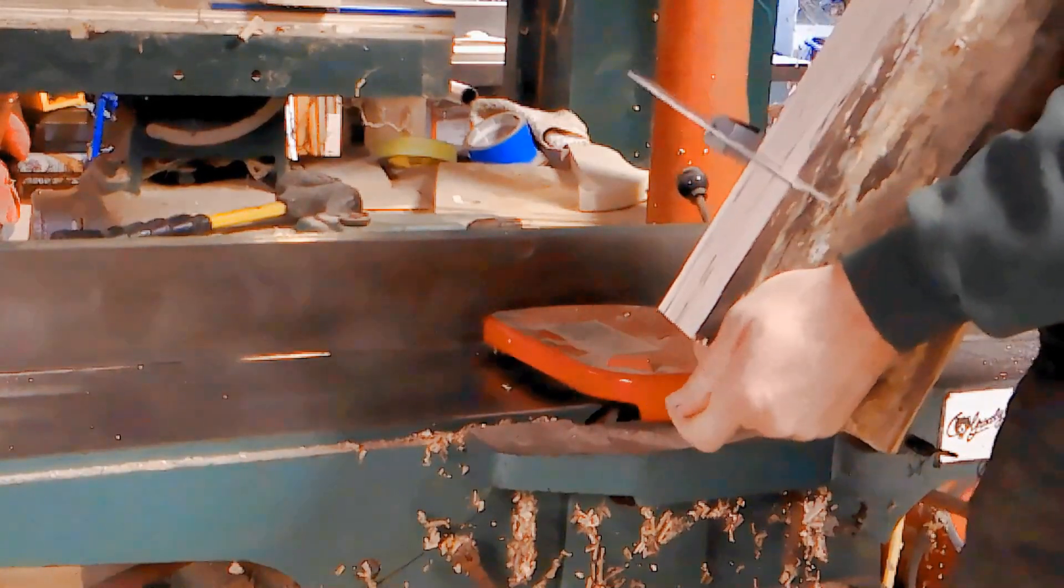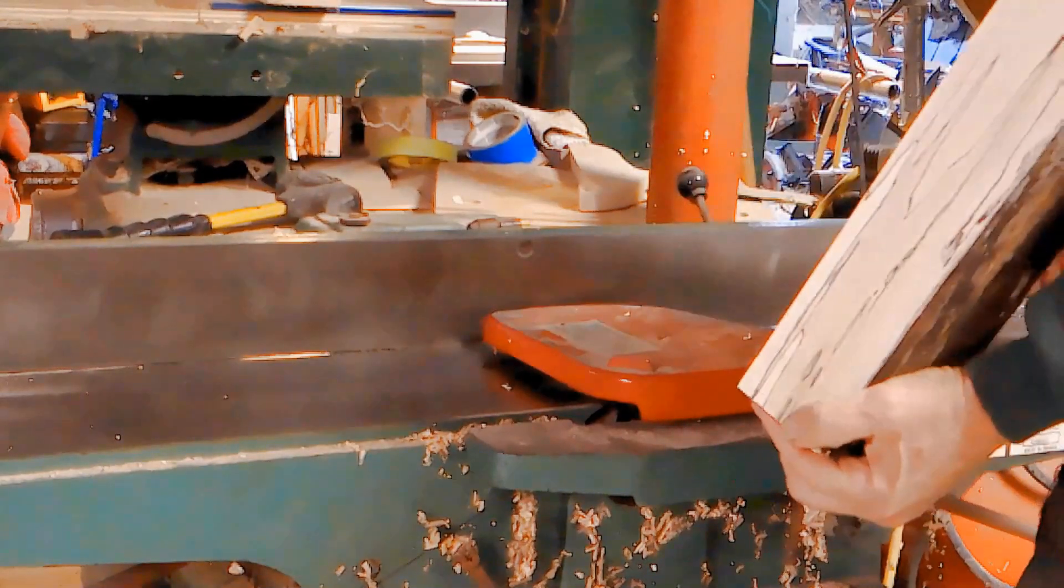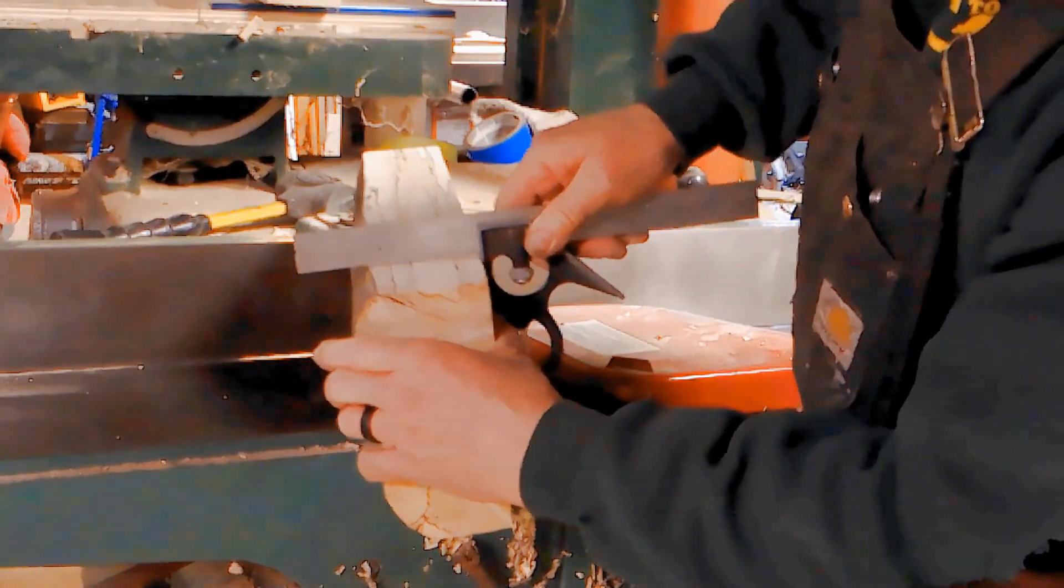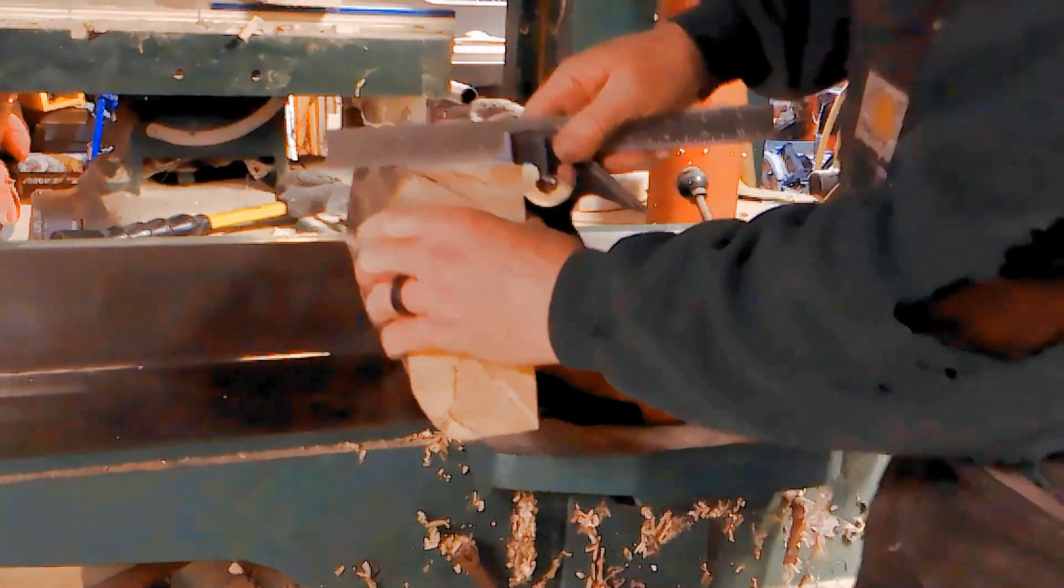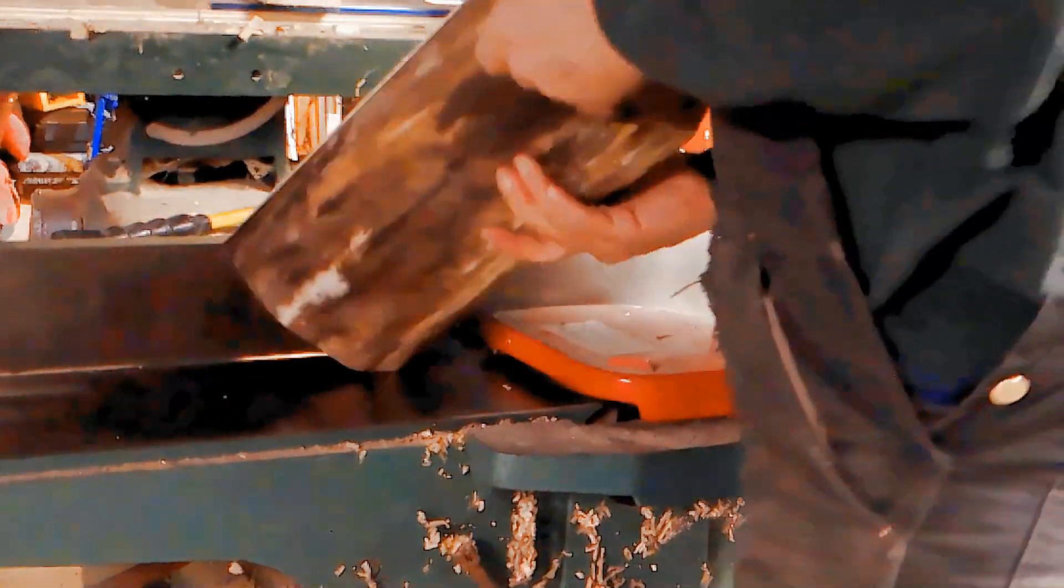We do this to get them nice and flat, nice and square to each other, because your next step is either going to take this board and put it to your bandsaw or to your table saw and make dimensional lumber out of it.